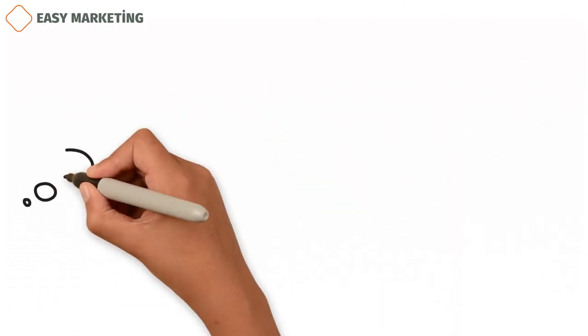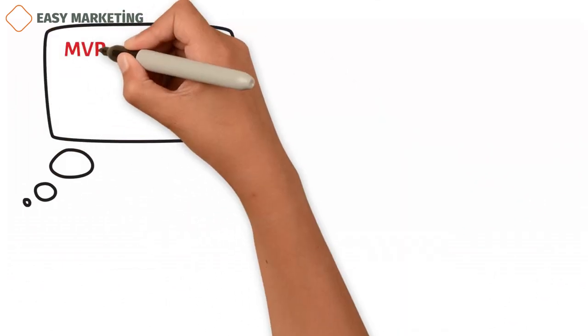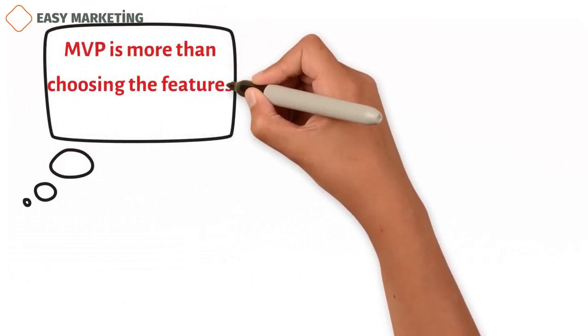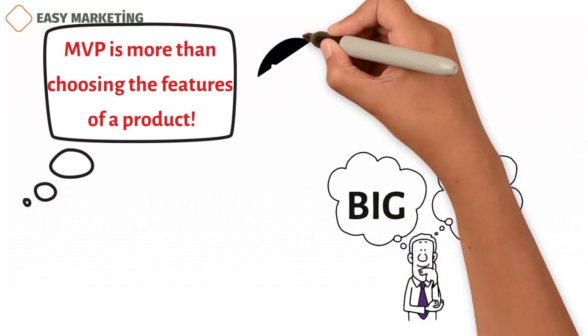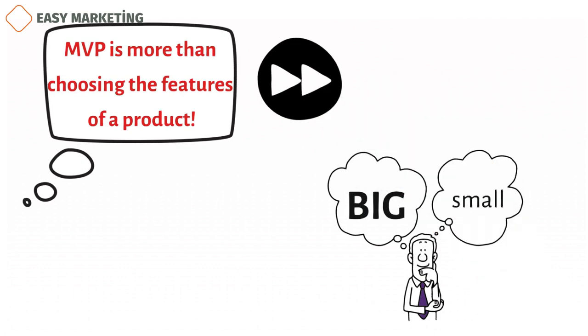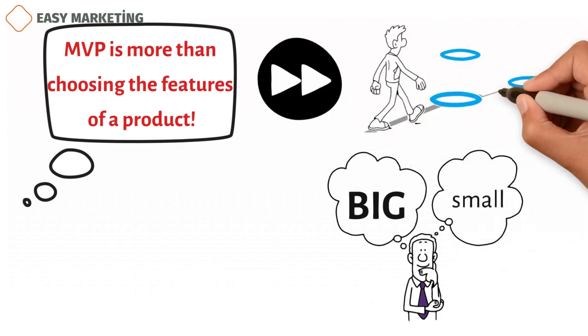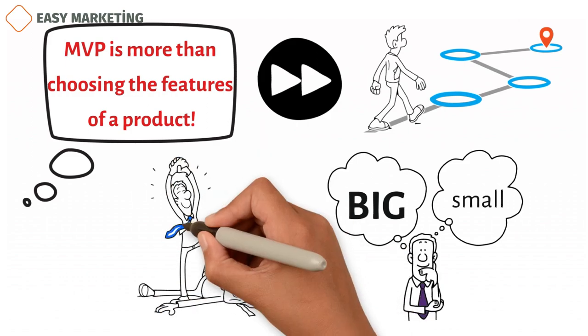Robinson says that the MVP is more than just choosing the features of a product that will give the best return on investment. It is also a way for the management and development teams to think. It says to think big and small at the same time. Think big enough that your first product can be a solid foundation for your next products, their next generation, and your roadmap, but not so big that your competitors can beat you.